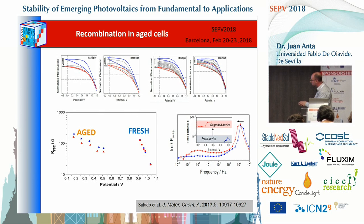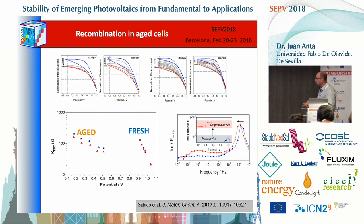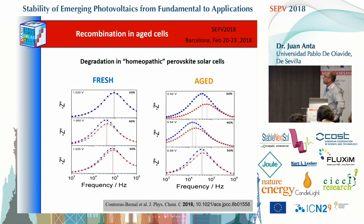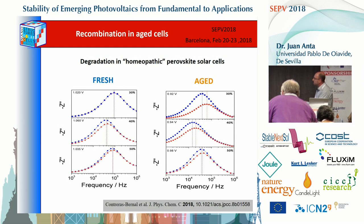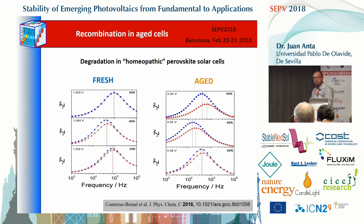Using IMPS on these degraded devices, we observe that the peak associated with transport shifts to lower frequencies, meaning transport is delayed for the degraded device. I'd like to finish with a paper we published recently on what we call 'homeopathic' perovskite solar cells — perovskites fabricated at ambient conditions at different humidities. Interestingly, when the perovskite solar cells are prepared at very high humidity, such as 50%, the cell resists aging much better than cells made in a glove box or at lower humidity, suggesting that a small amount of water within the crystalline structure somehow prevents degradation.